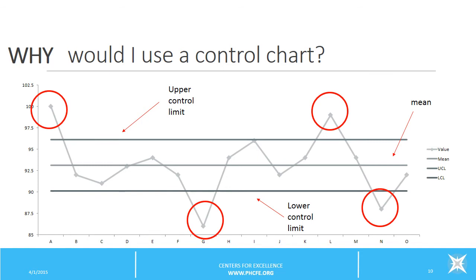These four individual data points indicate a special cause, as they aren't what you'd expect to see. And what you do about them is, again, you investigate the special cause.